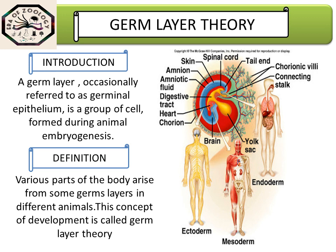The germ layer, occasionally referred to as germinal epithelium, is a group of cells formed during animal embryogenesis. Animal embryogenesis is the developmental process of the embryo, which occurs through spontaneous events involving many developmental processes.